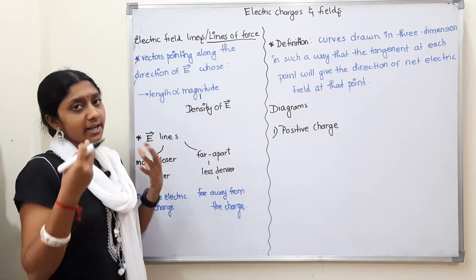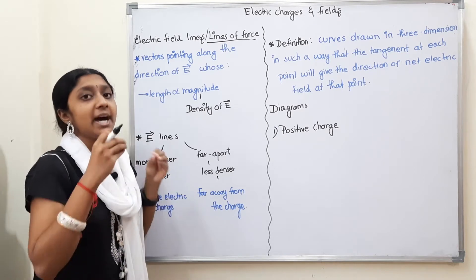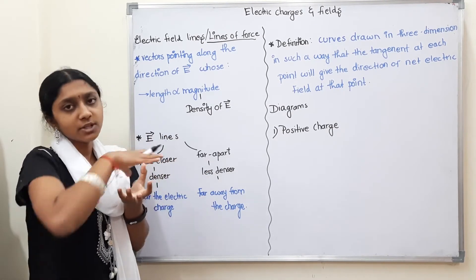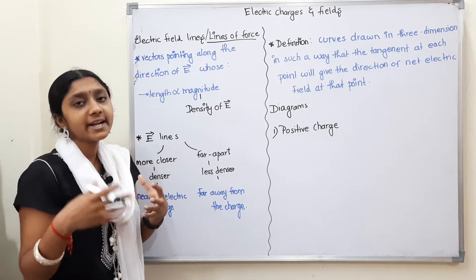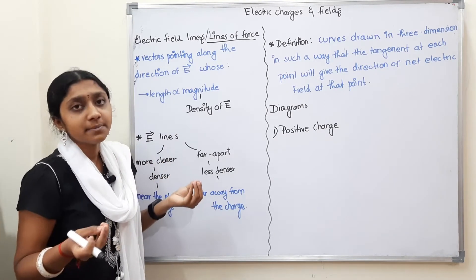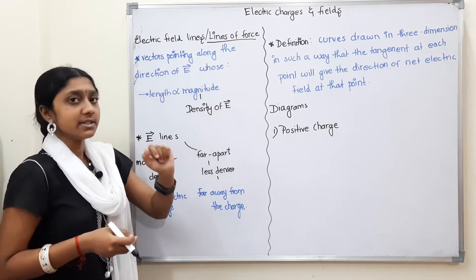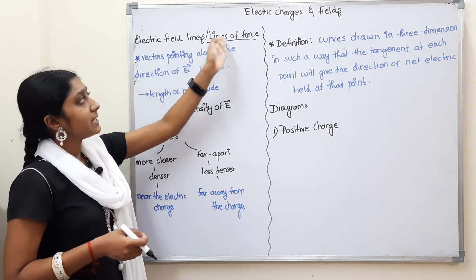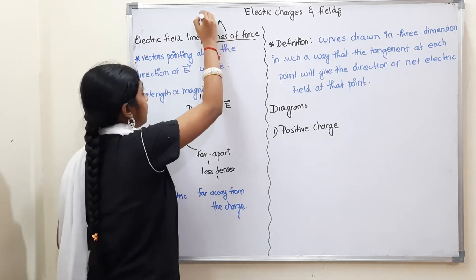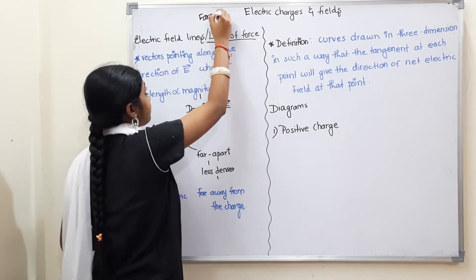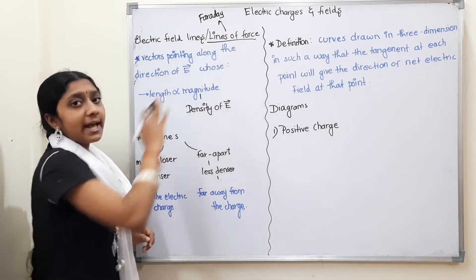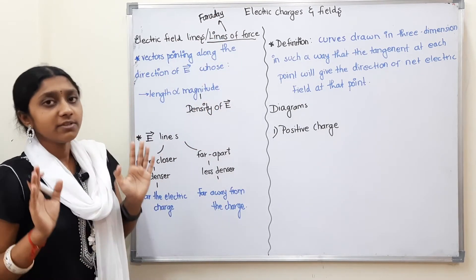Electric Field is a Vector Quantity, and Electric Field Lines represent it visually. Another name for Electric Field Lines is Lines of Force — this name was given by Faraday. So, Electric Field Lines and Lines of Force are the same thing.